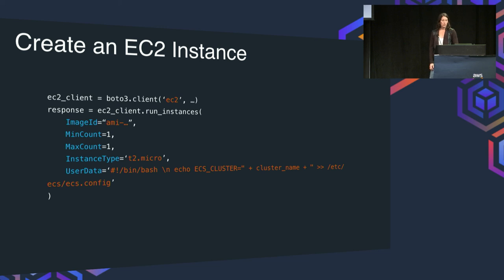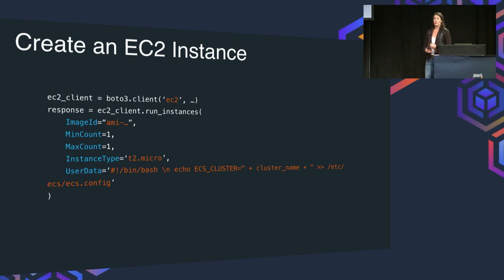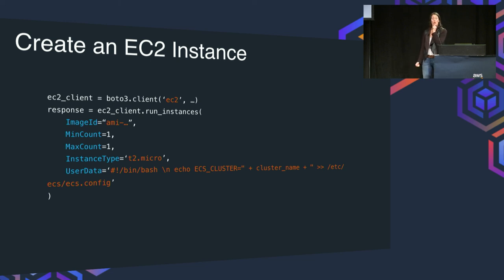The next thing is creating an EC2 instance. If you've worked with EC2 instances in AWS, this will look familiar. You give it an image ID — you can still use any base image you want. You can set the instance type and instance size. There's a laundry list of configurations you can set on an EC2 instance, and you can set all of them. Finally, you set the user data to point to the ECS cluster.